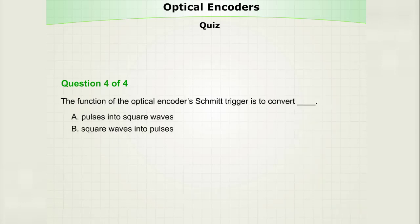And finally, the function of the optical encoder's Schmitt trigger is to convert A, pulses into square waves, or B, square waves into pulses? The answer is A, pulses into square waves.